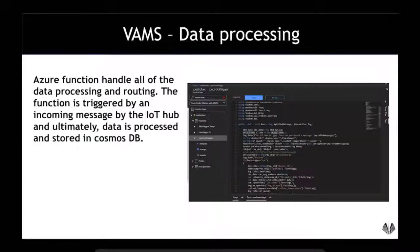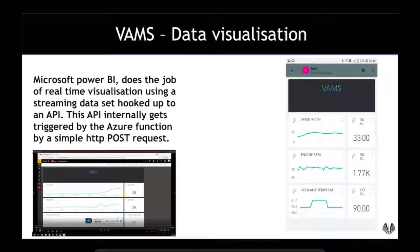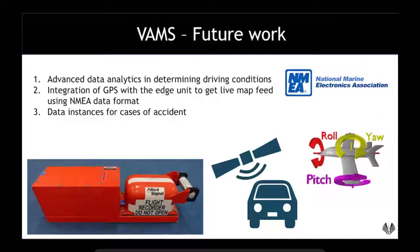For data processing in VAMS, we use the entire Azure Functions stack, where we capture each and every data point, pre-process it, and send it to CosmosDB or the Power BI dashboard. For data visualization, it is a streaming dataset and we visualize the live data coming in from a vehicle with a lag of three to four seconds maximum.